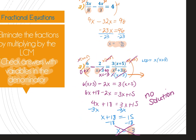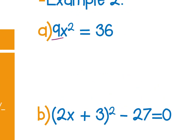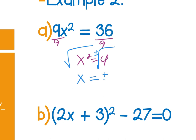The even root property tells you that when you have x raised to an even power equal to something and you take the even root — a square root, for example — you have to put plus and minus in front of your answer because there are two solutions. For example (a), divide by 9 first to get x² = 4, then square root both sides with ±: x = ±√4 = ±2.